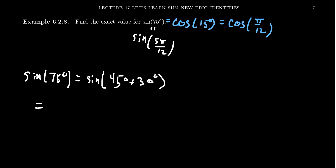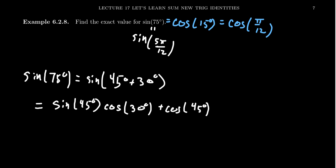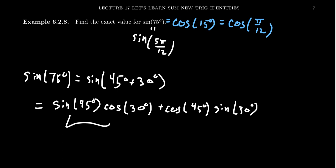Using the angle sum identity, sine of 75 degrees equals sine of 45 degrees times cosine of 30 degrees plus cosine of 45 degrees times sine of 30 degrees. Notice the same order of angles — 45 and 30 — toggling between sine and cosine, making sure each product has both a sine and a cosine.